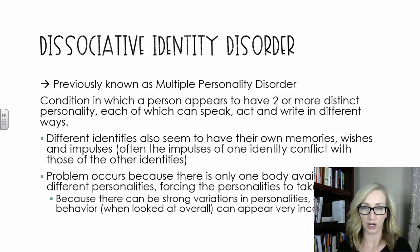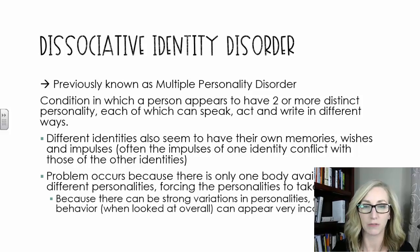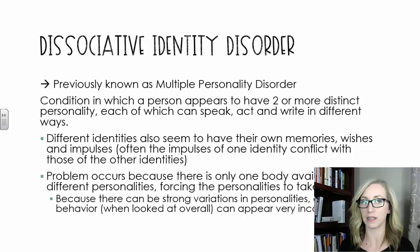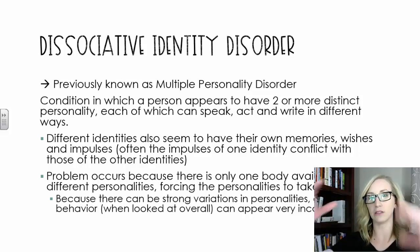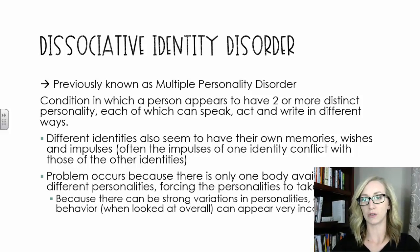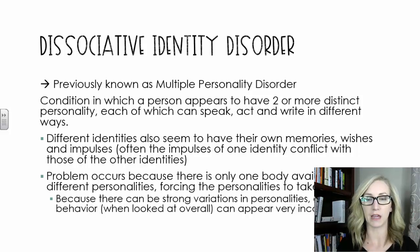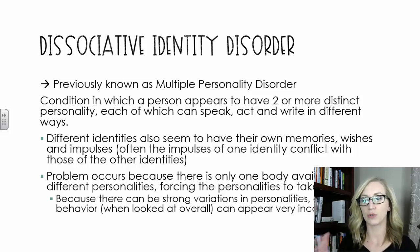Problems occur because there is only one body available for the different personalities, so it forces the personalities to take turns. Because there can be such strong variations in personalities, a person's behavior when looked at overall can appear very inconsistent. From the outside looking at someone with dissociative identity disorder, you just see these huge fluctuations in behavior — very erratic. Those huge fluctuations are a characteristic because you don't necessarily know right away that there are multiple personalities.